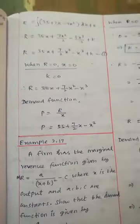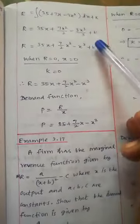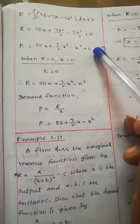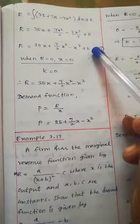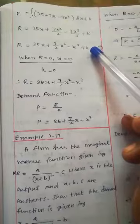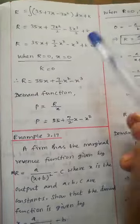That is equation number 1. To find the value of k, you can put the value of fixed cost. If you put the value of x equal to 0.